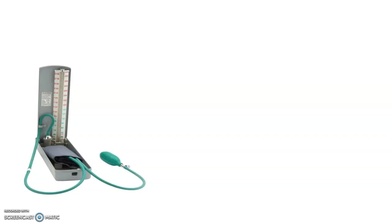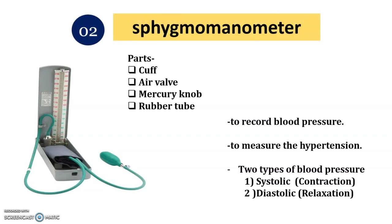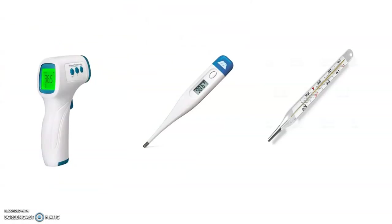Pause the video, think and write the name of the next spot. The spot is the sphygmomanometer. It is primarily used to check blood pressure or measure hypertension. Its parts include the cuff, which is tied around the bicep, and a bulb to pump air. The mercury level rises and you check whether the blood pressure is systolic or diastolic.